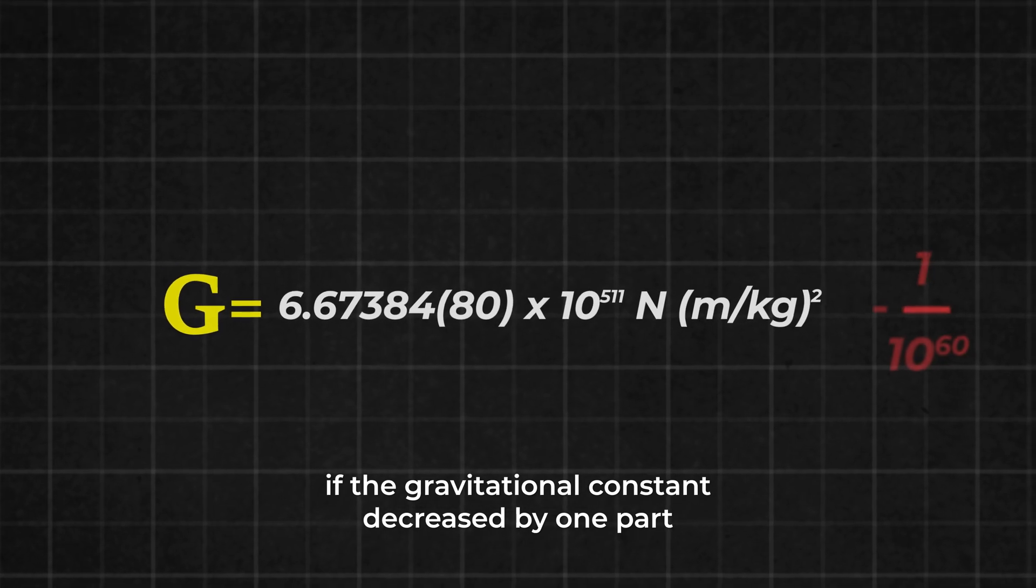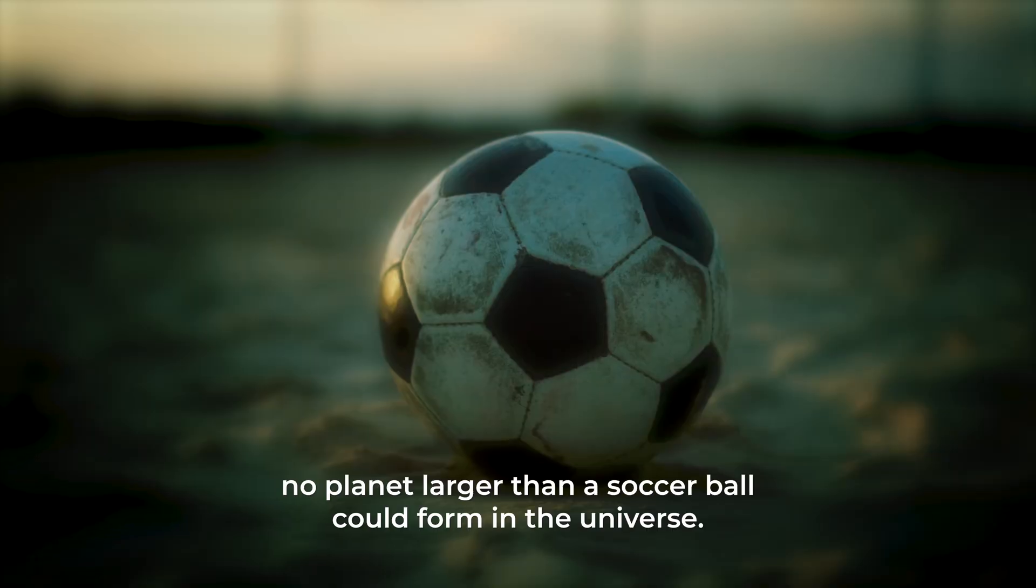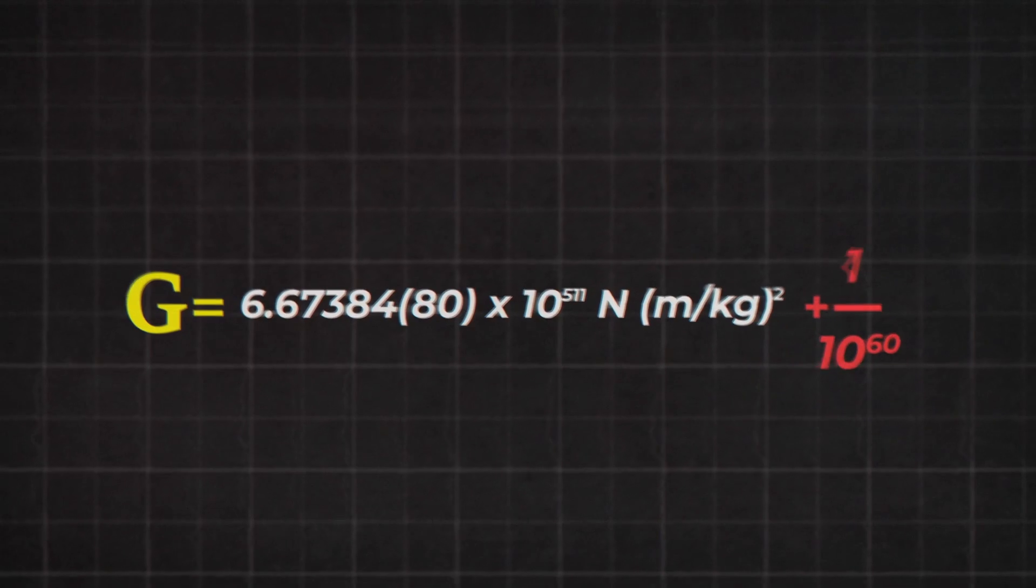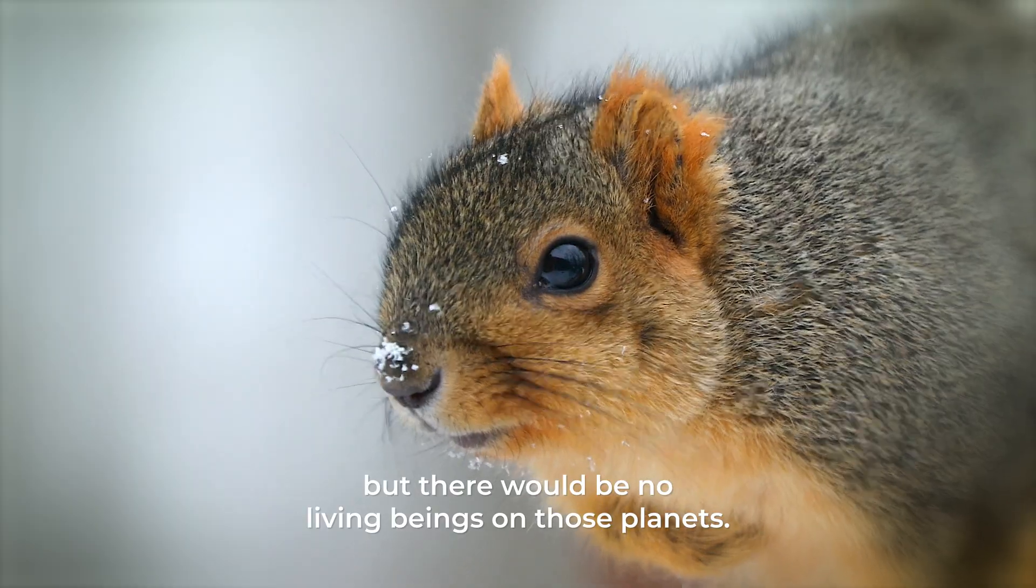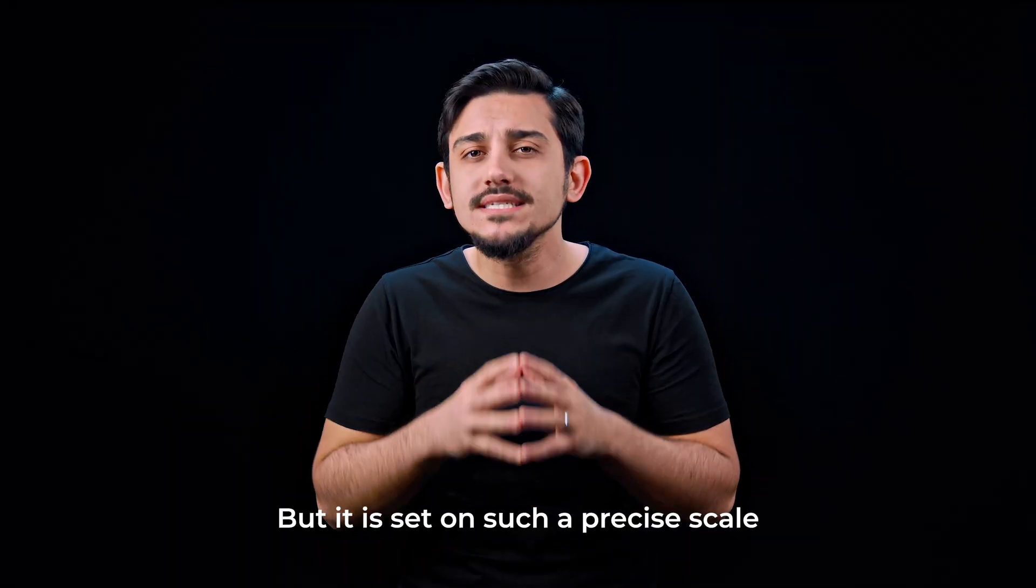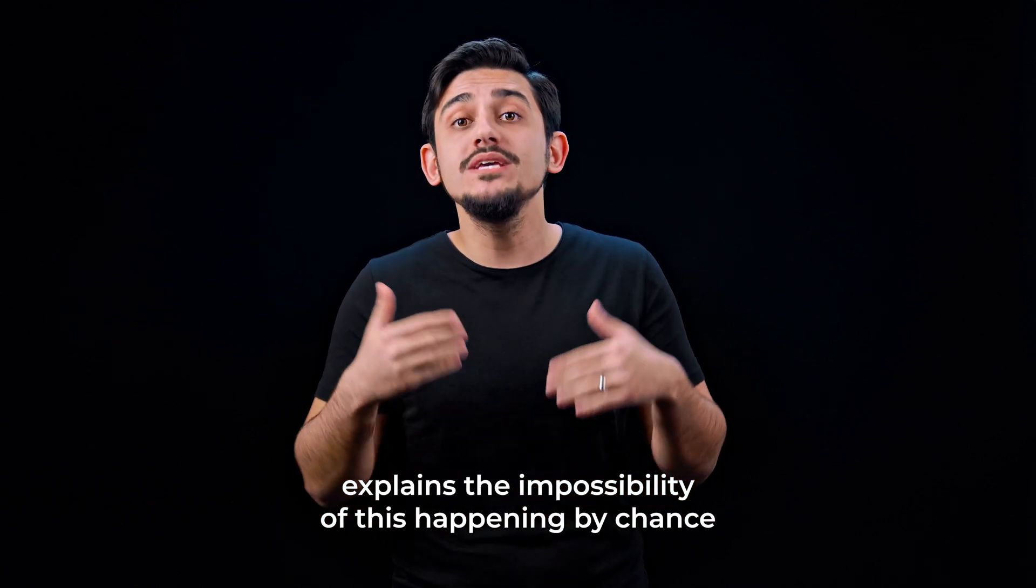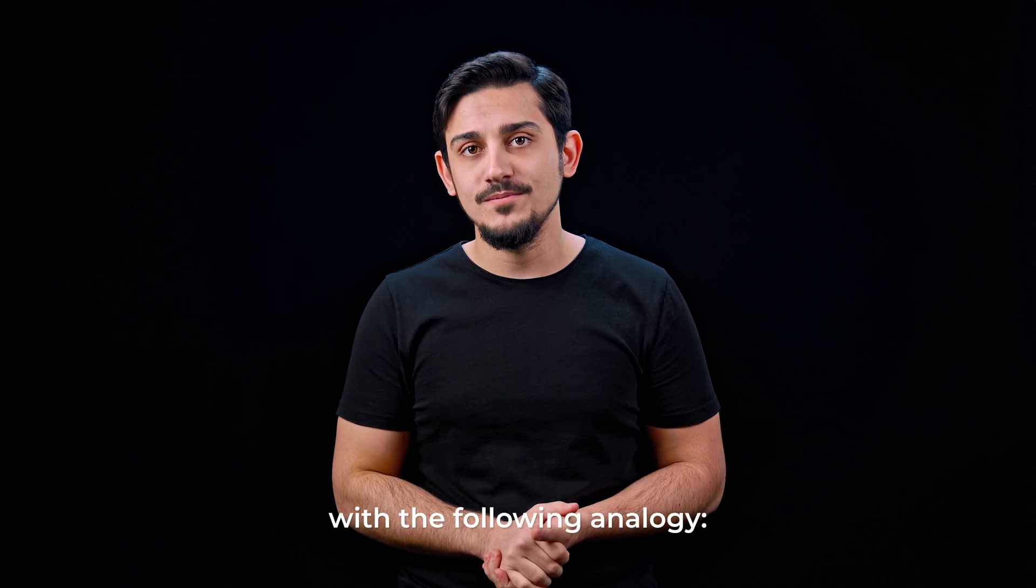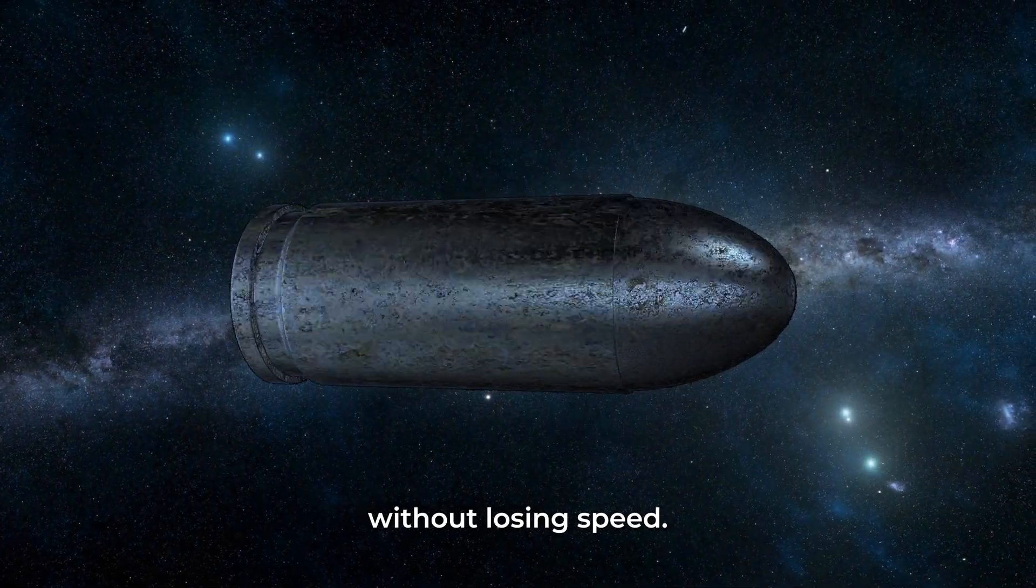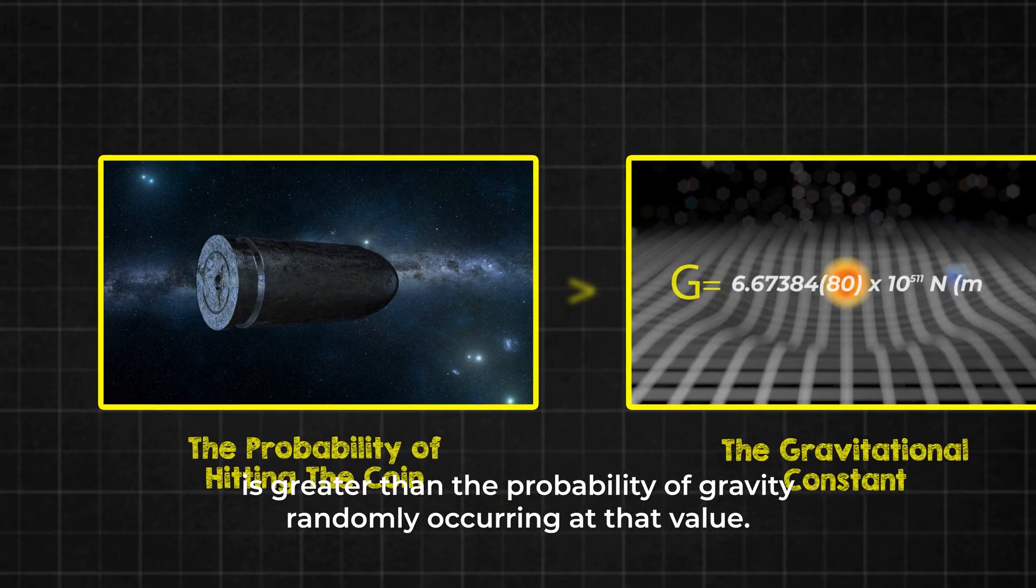For example, if the gravitational constant decreased by one part in 10 to the 60. That is, if a number with 60 zeros after one decreased by only one unit, no planet larger than a soccer ball could form in the universe. If the gravitational constant were to increase by one part in 10 to the 60, there would be large planets, but there would be no living beings on those planets. They would immediately disintegrate from the force of gravity and collapse in on themselves. But it is set on such a precise scale that it seems impossible to attribute it to chance. In fact, the philosopher Robin Collins explains the impossibility of this happening by chance with the following analogy: put a coin anywhere in the universe and shoot it in a random direction, and the bullet will go on and on without losing speed. The probability of hitting that coin at the edge of the universe is greater than the probability of gravity randomly occurring at that value.